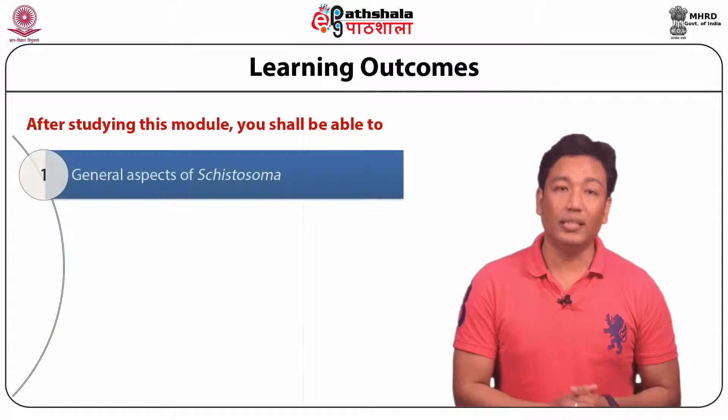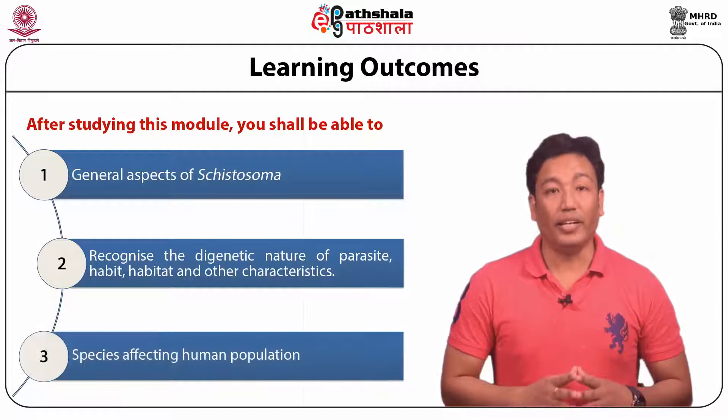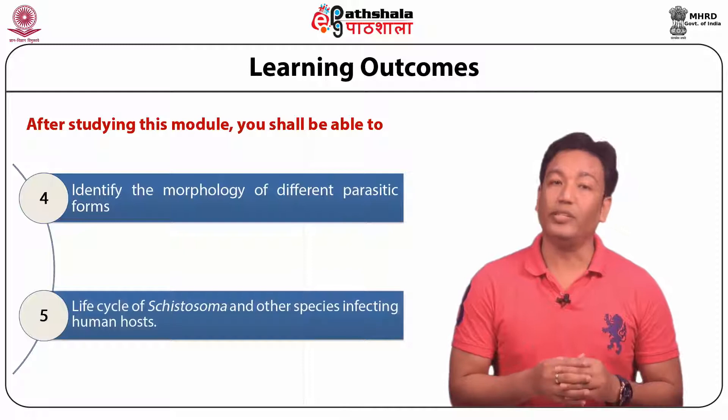After studying this module, you shall be able to understand general aspects of Cystosoma, recognize the digenetic nature of parasite, habit, habitat and other characteristics, species affecting human population, identify the morphology of different parasitic forms, and life cycle of Cystosoma and other species infecting human hosts.